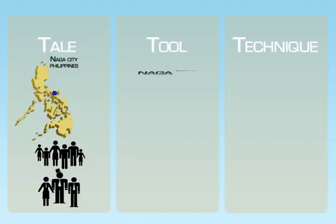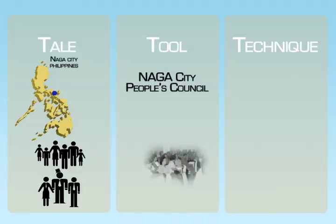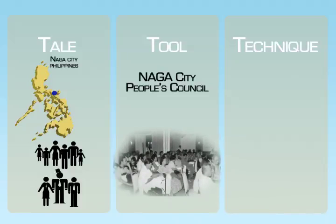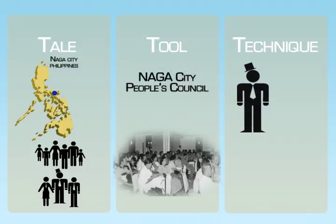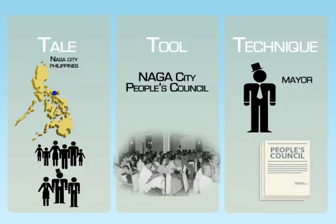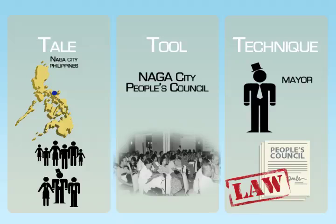Through the formation of the Naga City People's Council, various sectoral representatives come together and are able to push for various interests in a peaceful, legal, and productive venue. This initiative was made possible primarily through a government champion — the former mayor who spearheaded the reform and legalized the formation of the People's Council. This made the People's Council sustainable and held the city government, whoever gets elected, accountable.